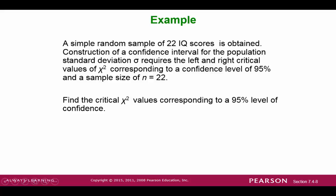Let's do a quick example of finding some critical values. Suppose we have a sample of 22 IQ scores, and we want to construct a confidence interval for the standard deviation, which requires left and right critical values for chi-square. Suppose we want to be at the 95% confidence level. Let's find the critical values.